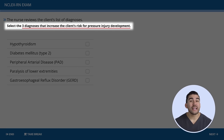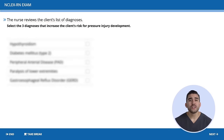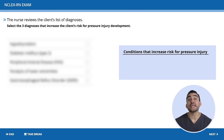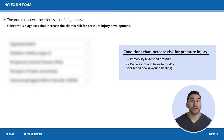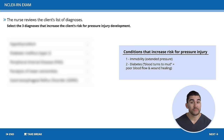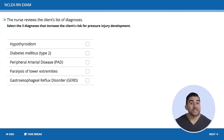This question asks to select three diagnoses that increase the client's risk for pressure injury development. Before looking at the options, think about what increases pressure injury risk. Number one is immobility — bedridden clients have extended pressure even on bony prominences. Number two is diabetes, which causes poor blood flow and poor wound healing due to high blood sugar. And the last one is vascular disease — any type of vascular disease impairs circulation, which impairs healing.